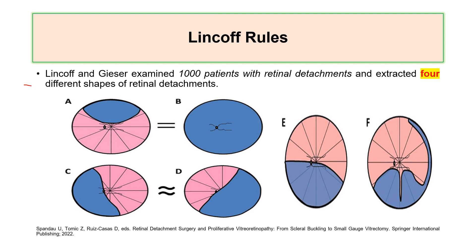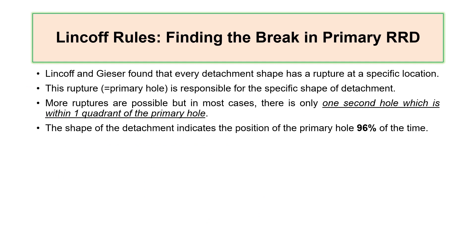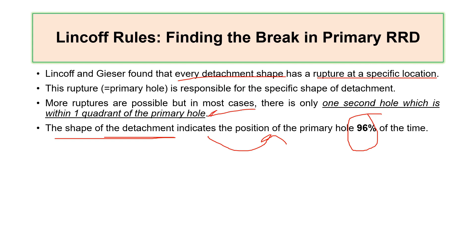After examining 1,000 adult patients with rhegmatogenous retinal detachment, they concluded there are four different shapes: first, superior retinal detachment, which equals total retinal detachment; second, superior nasal or superior temporal detachment; third, inferior shallow detachment; and fourth, inferior polus detachment. In 96% of cases, each shape indicates the position of the primary break, and any second hole is usually within one quadrant of the primary hole.